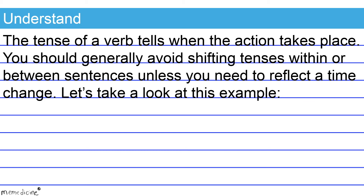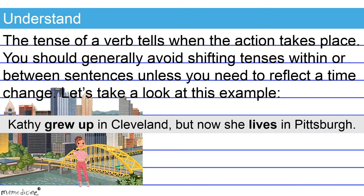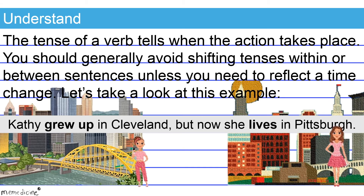Let's take a look at this example: Kathy grew up in Cleveland, but now she lives in Pittsburgh. The sentence shifts to the present tense to reflect a time change. This is appropriate in this instance. We shift from Kathy's younger years, as indicated by the verb phrase 'grew up,' and then to her present adult self with the verb 'lives.' This shift in tense is appropriate.